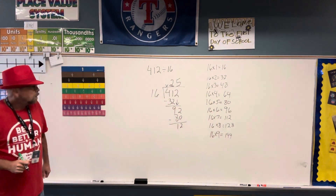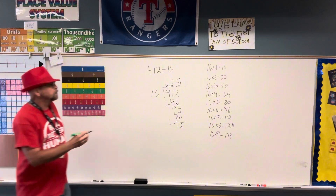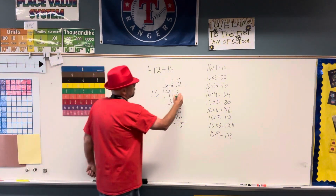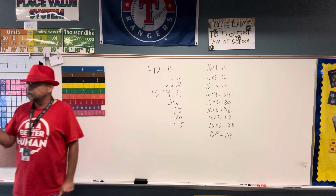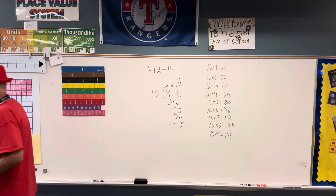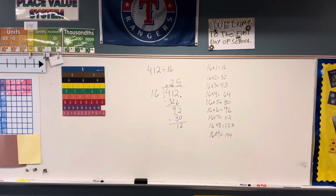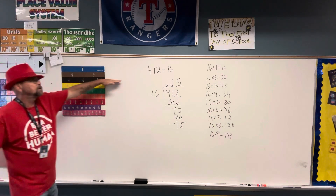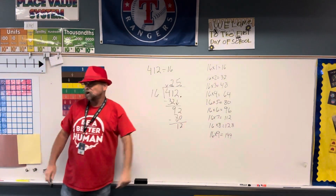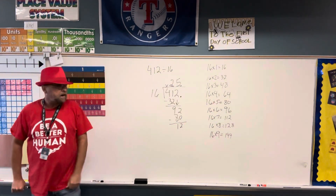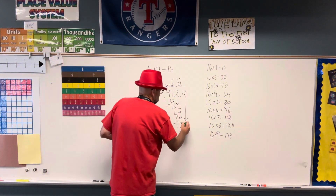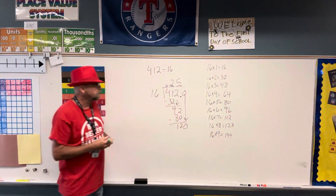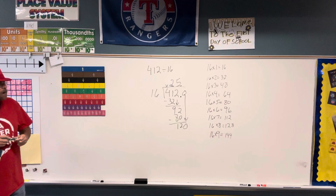12. And I could add a decimal point here if I wanted and put a 0, but I don't know how long that's going to go. So if it doesn't specify, if it just says do this problem, then you can probably use the remainder.